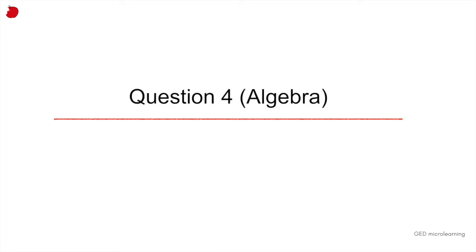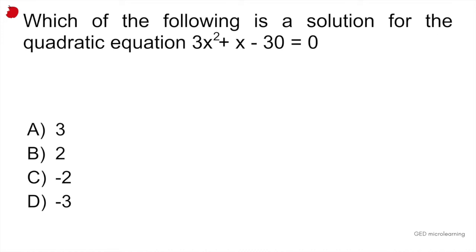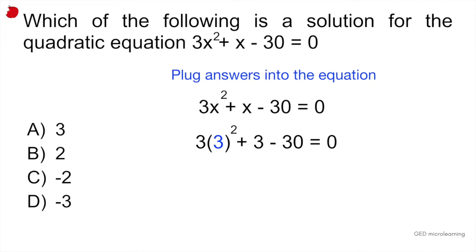Question 4 is another algebra problem involving quadratic equations. It tells you which of the following is the solution for the quadratic equation 3x squared plus x minus 30 is equal to 0. This is one of those problems where what you have to do is basically take the answers that they're providing for you and just plug them into your equation until you get the correct answer. In this case, what I did is I actually put the answer in the first position to save us some time. So if you plug 3 where there's an x in this equation, you would end up with an equation that looks like this.